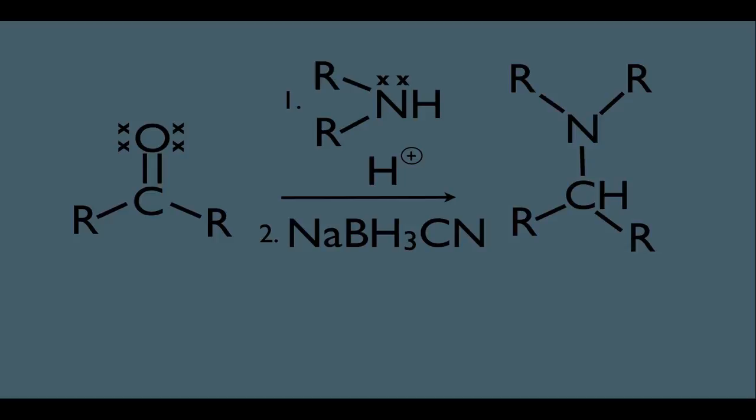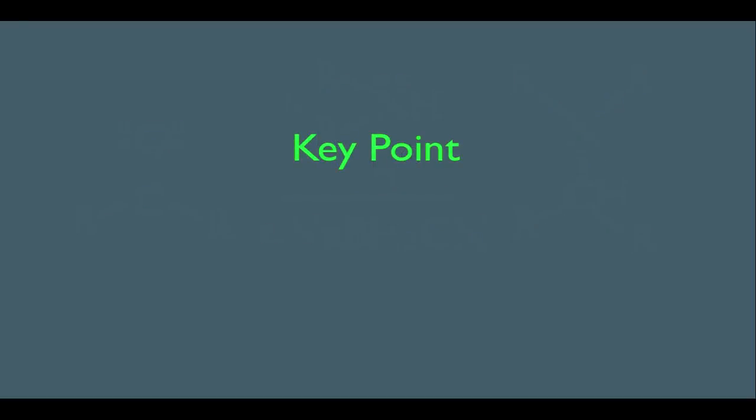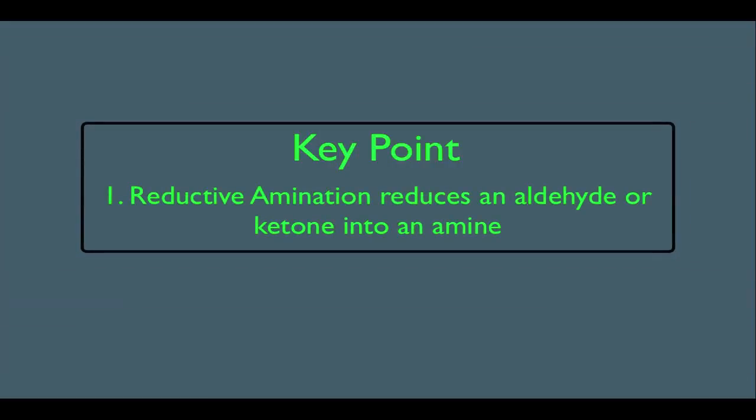So what are our key points here? All we have to know is number one: reductive amination reduces an aldehyde or a ketone into an amine.